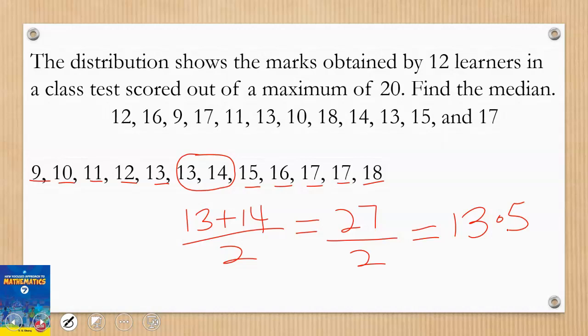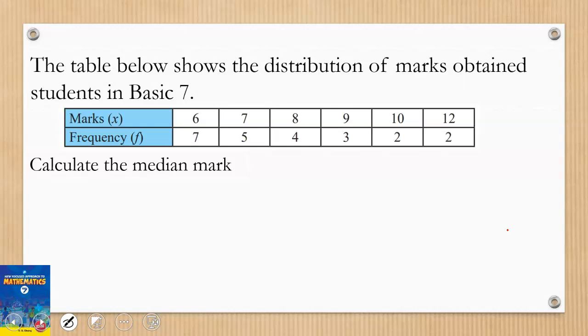Let's take another example with ungrouped frequency. You want to find the median mark. With this one, you first have to look at the total frequency - the total number of people in the class. The total number of people will give you the values here: 7 plus 5 plus 4 plus 3. So 7 plus 5 plus 4 plus 3 will give us 19, 19 plus 2 is 21, 21 plus 2 will give us 23. So our total mark is 23.